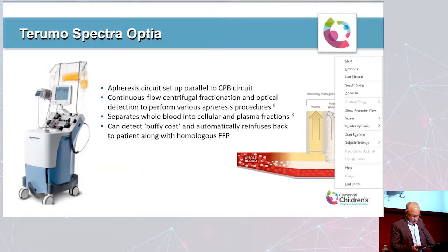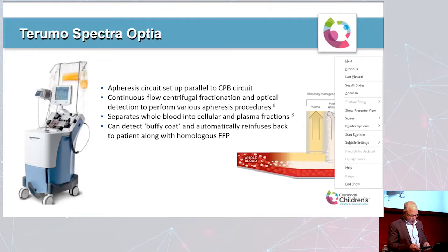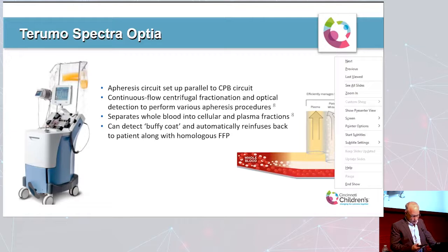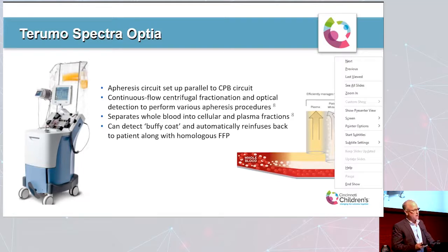This is the device we use at our institution — I'm not promoting it; due to time limitations I'll just discuss what we do at Cincinnati Children's. The apheresis circuit is set up in parallel to the bypass circuit. Apheresis technology uses a computerized process to retrieve whole blood, fractionate it into cellular and plasma layers via centrifugation, separate and remove the target component, and return remaining fractions with a volume replacement fluid — in this case FFP. Apheresis devices also detect the buffy coat and automatically re-infuse platelets and white blood cells at determined intervals.